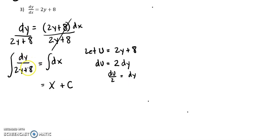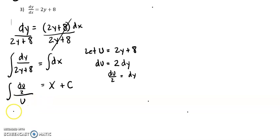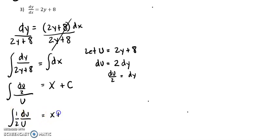Plugging back in: dy we know is du over 2, and 2y plus 8 we know is u. So we have du over u with a one-half in front, equals x plus c.